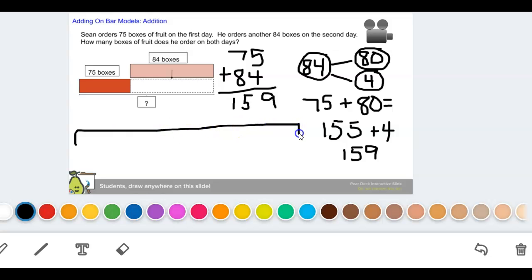I could also solve it using a number line. I'm going to start with 84, and I'm going to add 10. That gives me 94. So I'm going to add 20. So plus 10 plus 20. That gives me 114.